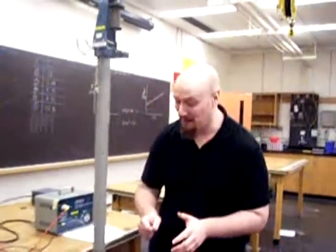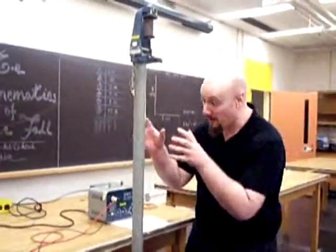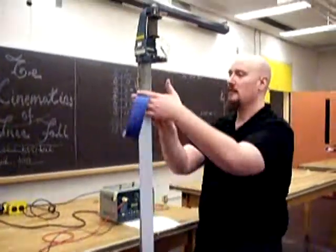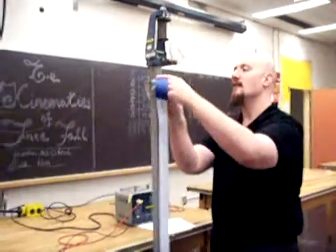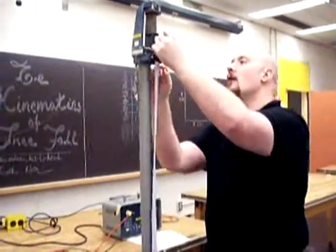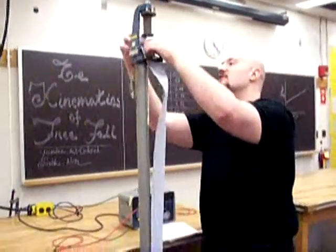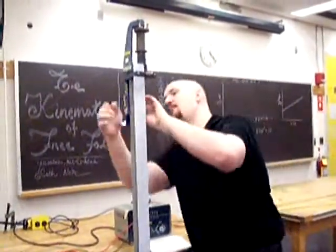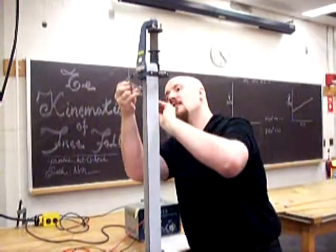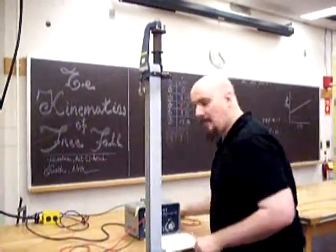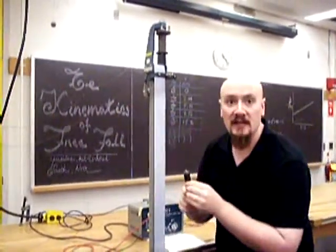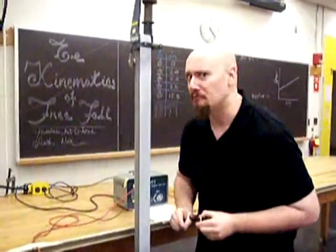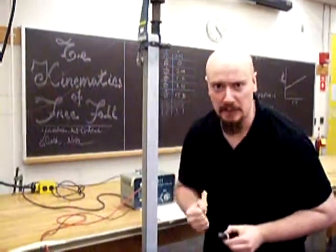So now, to gather information about where the sparks happen, we put a piece of wax paper in between the two wires. Now, what will happen as the sparks are triggered by the object, it will leave burn marks on the paper. And by studying those burn marks, we can get the data we need.